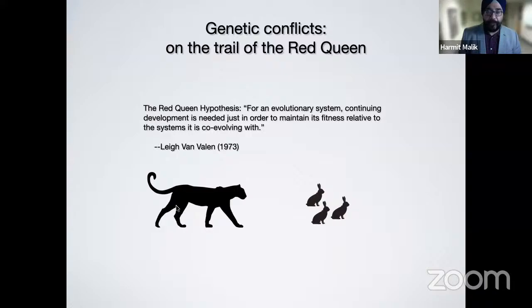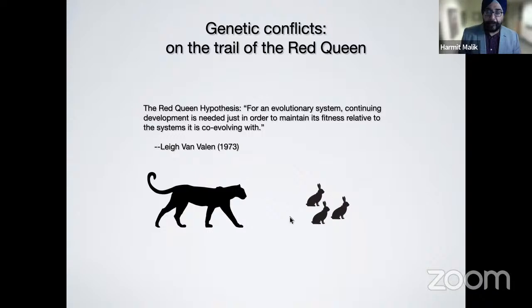This idea was seized upon by evolutionary biologists like Lee Van Valen and his peers to formulate the Red Queen hypothesis. They argued that for a species to be successful, it was not sufficient to adapt to its local abiotic environment like temperature or moisture. It also needed to adapt to other competing species. For example, snow leopards needed to deal not just with cold but also with the adaptive escape strategies of snow hares — and vice versa. The fitness of the leopard population was intricately tied to the fitness of the snow hare population.